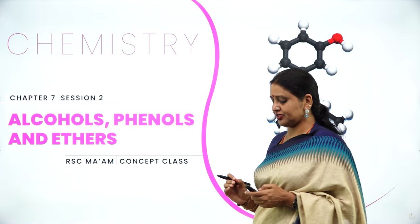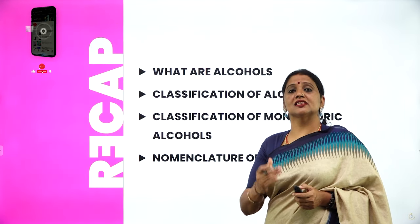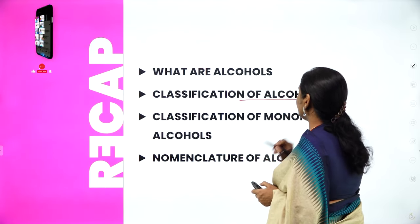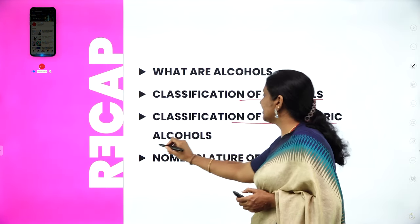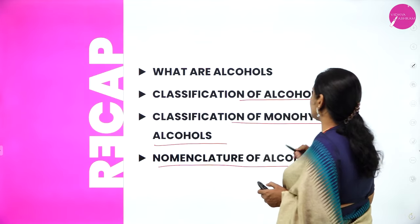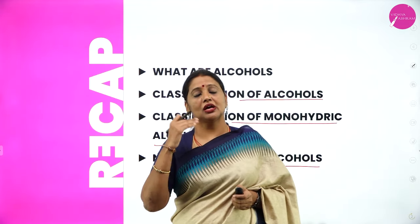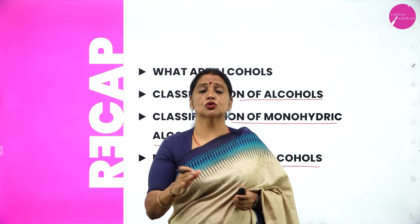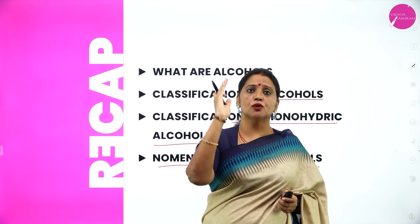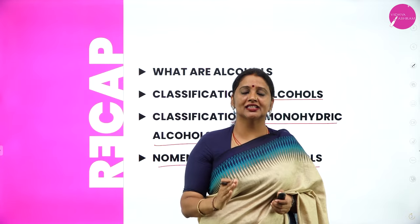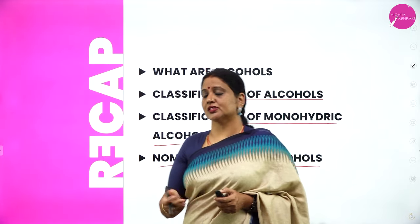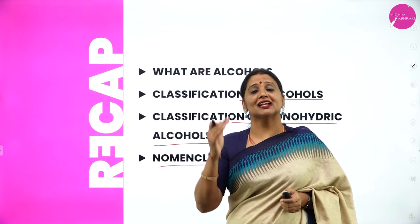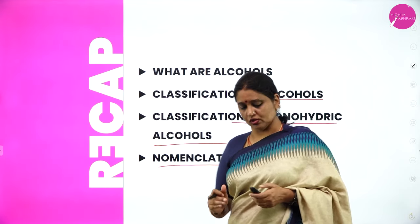In the previous session, that is in the first session, I discussed about what are alcohols, classification of alcohols, classification of monohydric alcohols, as well as nomenclature of alcohols. Depending upon number of OH groups, alcohols are classified into four types: monohydric, dihydric, trihydric, and polyhydric alcohols. After that, I discussed about how monohydric alcohols are classified into different types, and later about nomenclature of alcohols.